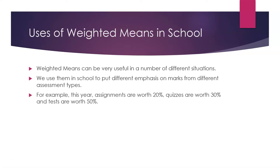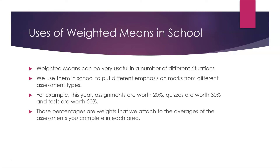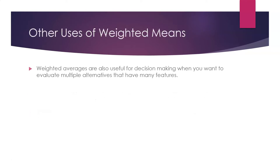This year assignments are worth 20%, quizzes are worth 30%, and tests are worth 50%. Those percentages are weights that we attach to the averages of the assessments that you complete in each area. So we add up all of your assignments, figure out what your marks are as an average percentage, and then we assign them a weight of 20%. There are other uses of weighted means as well.